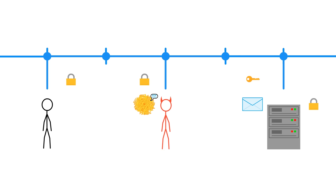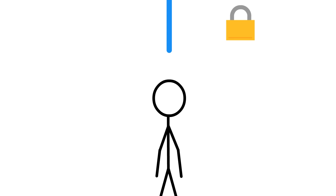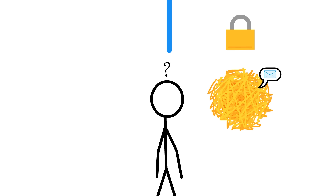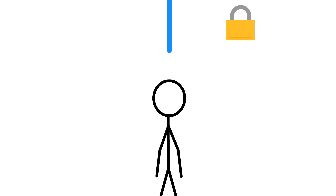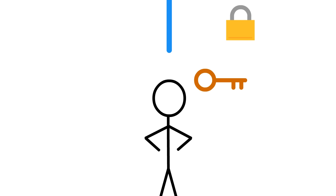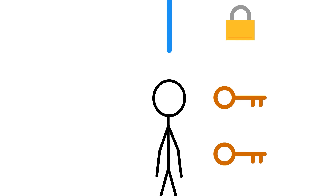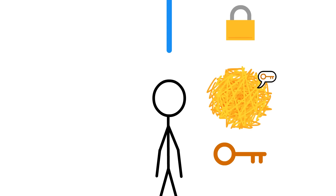So that covers how you can send the server secret information. How does the server send you secret information? You don't have the server's private key, so you can't unscramble messages that were scrambled by its public key. Instead, you generate your own unique, plain old regular key on the spot and send the server a copy. But before you send the key through, you use the server's public key to scramble it.